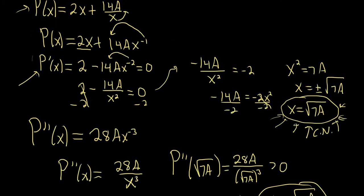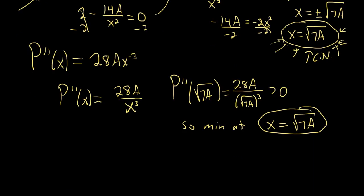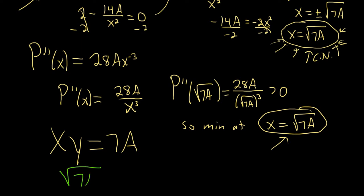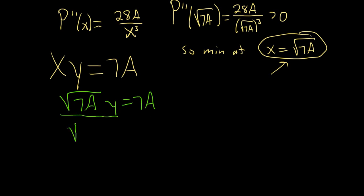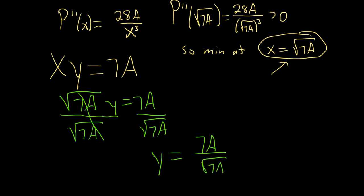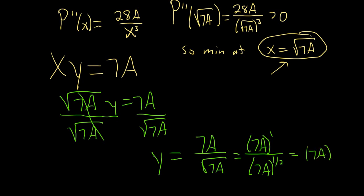To find y, go back to x times y equals 7a and plug in x equals square root of 7a. So square root of 7a times y equals 7a, meaning y equals 7a over square root of 7a. That simplifies to 7a to the 1 divided by 7a to the 1/2, and subtracting exponents gives 7a to the 1/2 — so y equals square root of 7a.